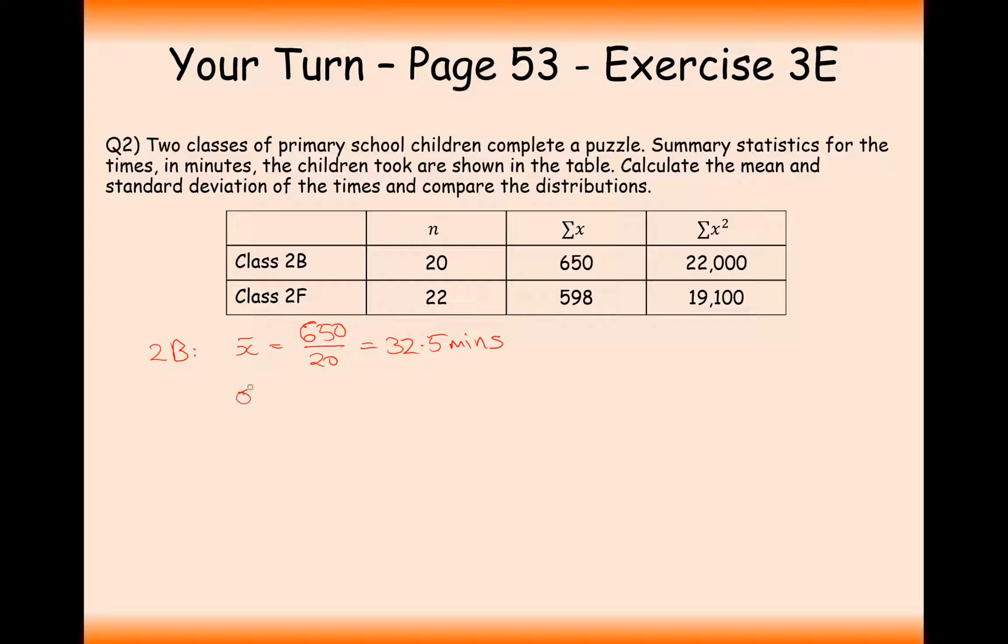For the standard deviation, it is the square root of the sum of x squared divided by n subtract the mean squared. So calculate this. And when you calculate this, you get 6.61.